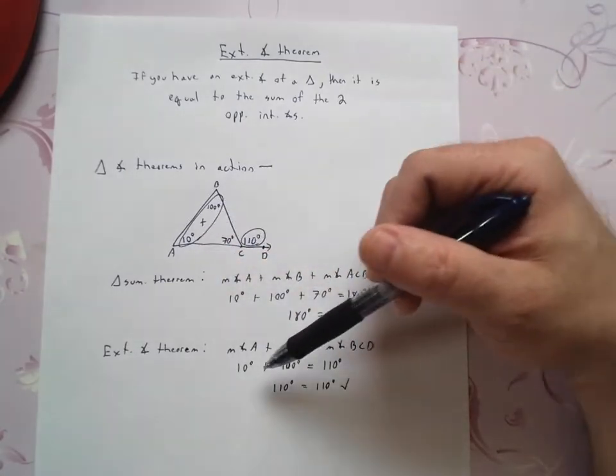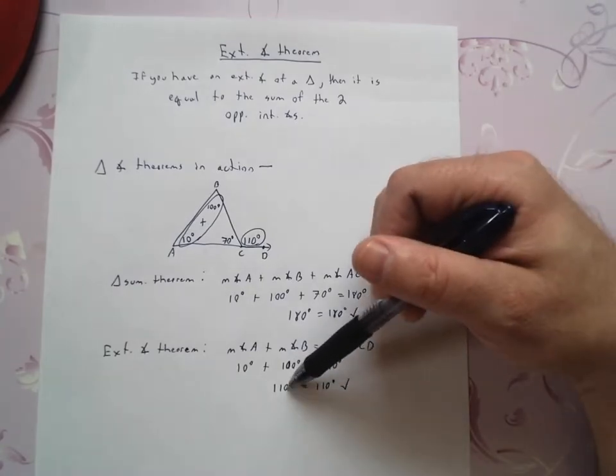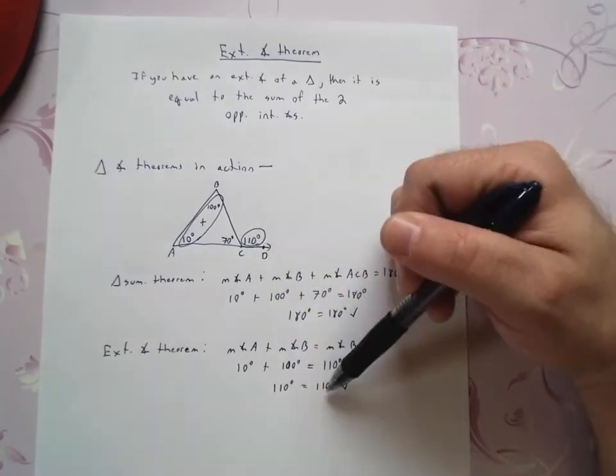Here the angles are opposite. So if I take 10 degrees and 100 degrees, that's 110 degrees, which is the same as that guy right there.